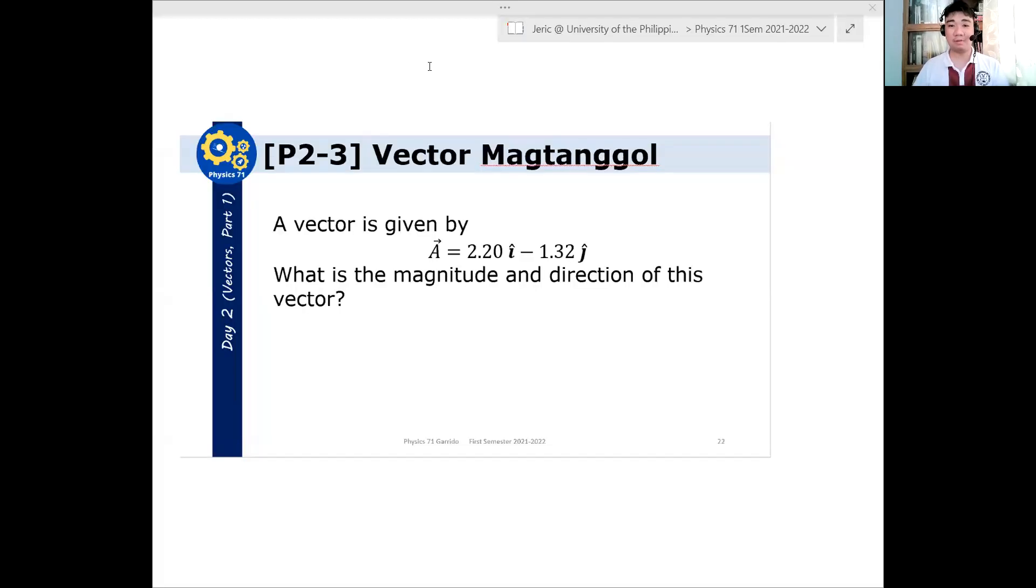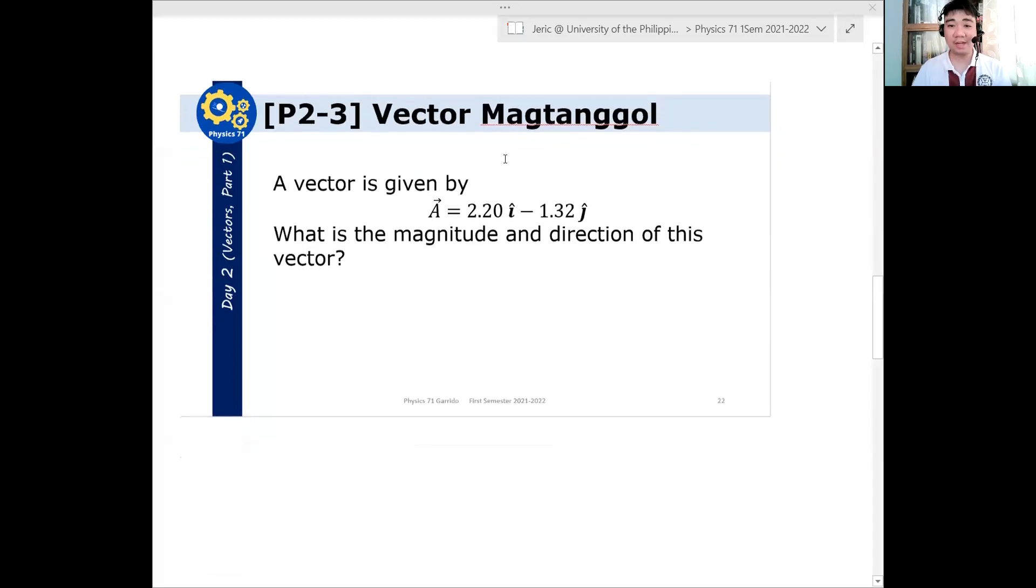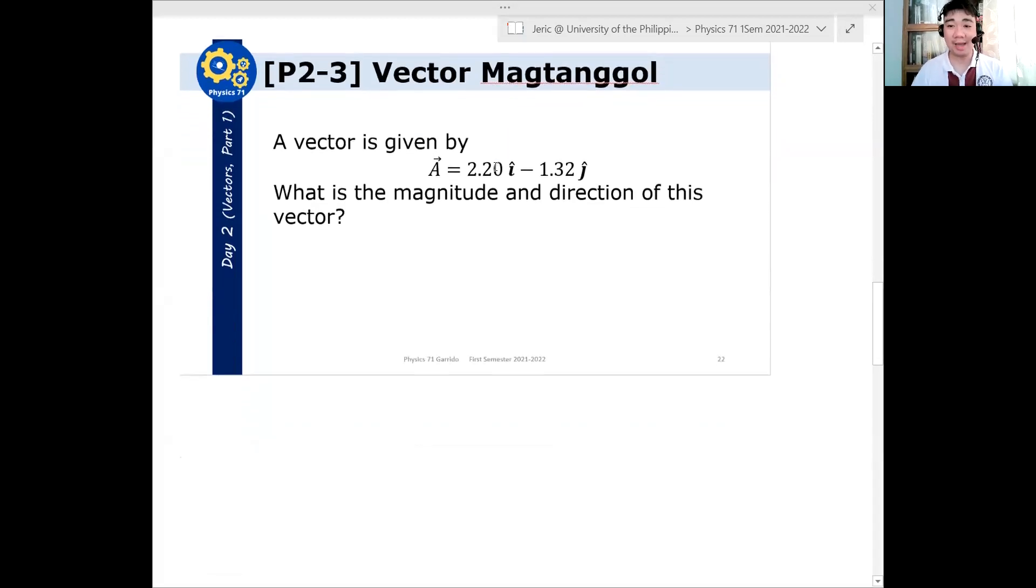Okay, two minutes have elapsed, so let's solve this problem. A vector is given by A = 2.20i hat minus 1.32j hat. What is the magnitude and direction of this vector? So paano hanapin yung magnitude? So this is like, ganyan. Paano hanapin yung magnitude?